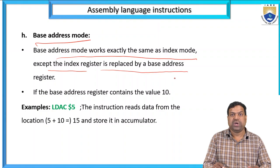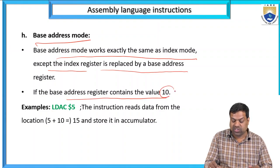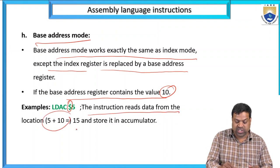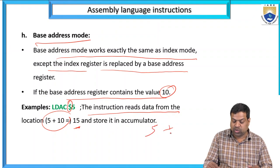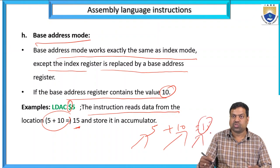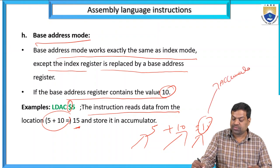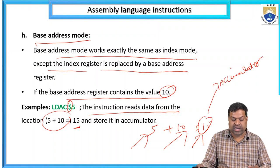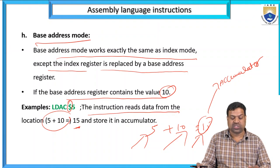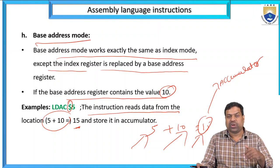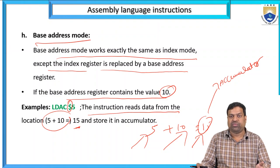Base address mode works exactly the same as index mode except the index register is replaced by a base address register. If the base address register contains the value 10, and the instruction location is 5, then 5 + 10 = 15 is stored in the accumulator.